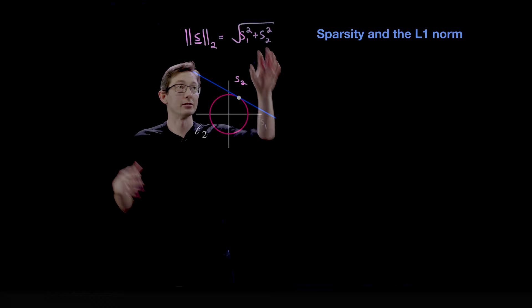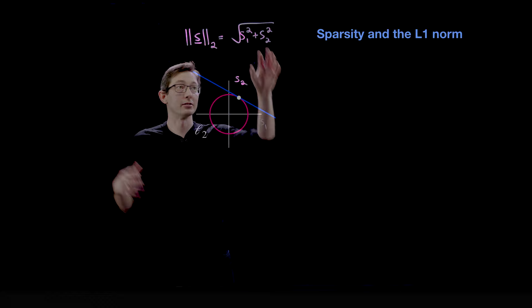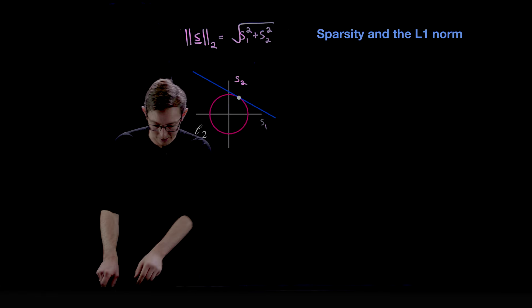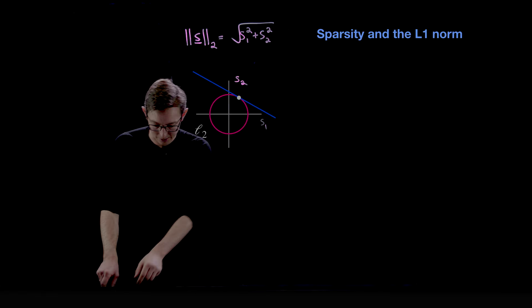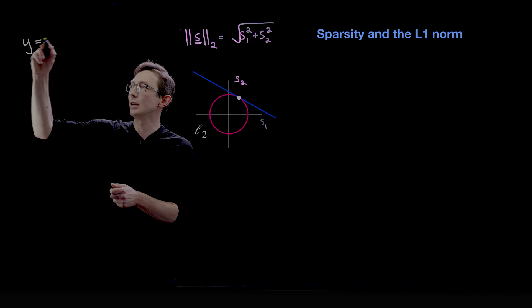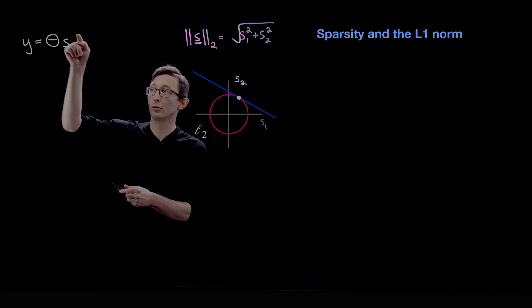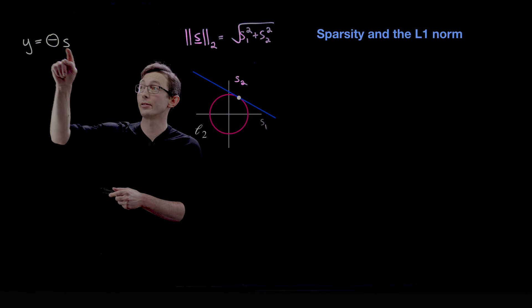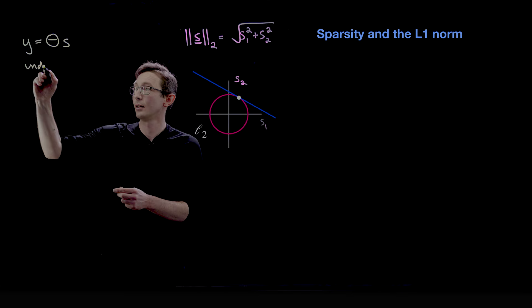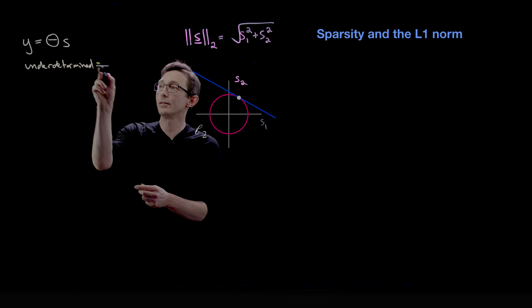This is the regular norm for any Euclidean vector space. Now I'm going to walk through specifically how this is used to solve the compressed sensing problem. We're trying to solve y = θs, where we know y and θ and we're solving for s. This is an underdetermined system of equations, so there are infinitely many s's that satisfy it.